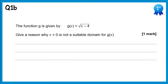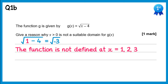For this question we need to give a reason why x greater than 0 is not a suitable domain for g(x). We need to find a value in the domain where the function is not defined. Starting with x equals 1: the square root of 1 minus 4 is the square root of negative 3. You can't square root a negative number, so this is a problem. In fact, this function is not defined at x equals 1, 2, or 3.